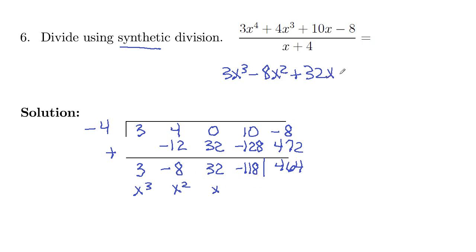then minus 118 plus remainder, 464 over divisor, x plus 4. And there we have it.